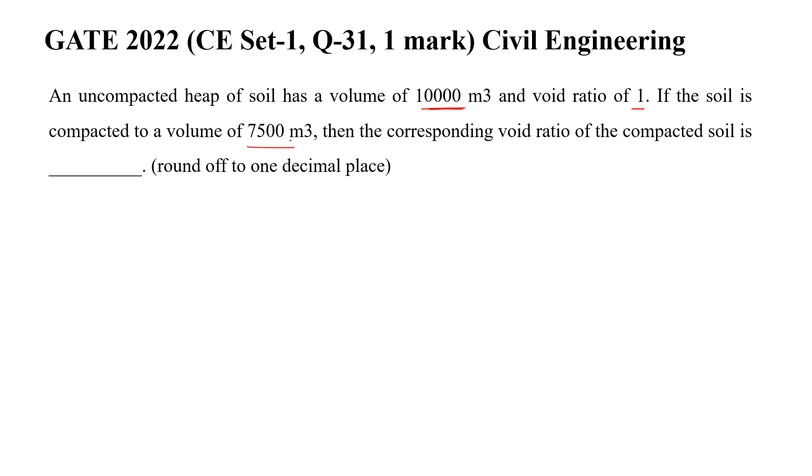us give first soil is in the stage of 10,000 meter cube volume. Let us say this is V1, then it has the void ratio 1. Then what happened, it is compacted to a volume of 7,500 meter cube. Let us say this is V2, then what is the void ratio, so E2 is how much?